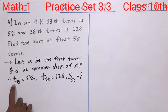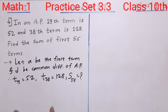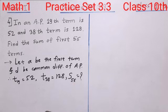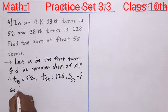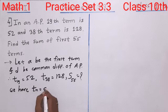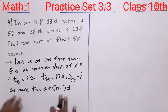We can use the formula for TN. We get two equations using these two given things, and using what we get from those two equations will be applied in the formula of SN. Now let us write the formula for TN. We know that TN is equal to A plus in bracket N minus 1 into D. This is the formula for TN that we have already studied.